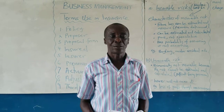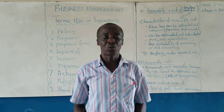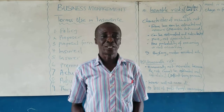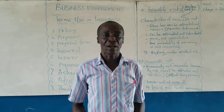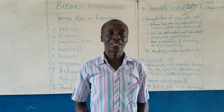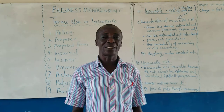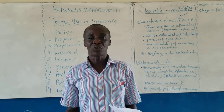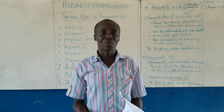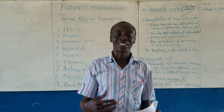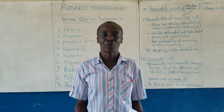We are continuing with our lessons on insurance. We now know what insurance is — it is a contract between two parties where one of the parties, called the insurer, for a consideration called premium, agrees to indemnify the insured in the event of the occurrence of the risk, which may or may not occur.